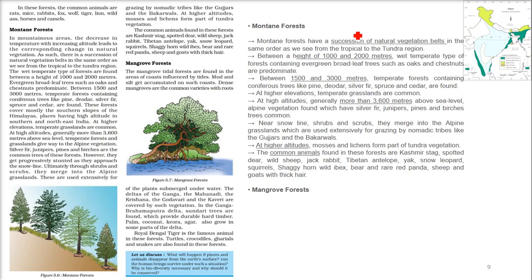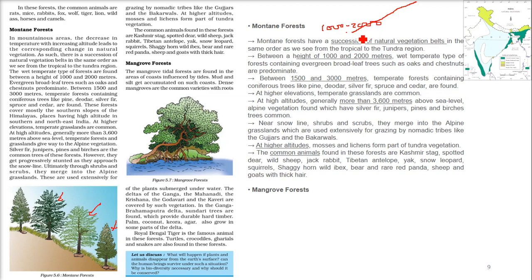From 1000 to 2000 meters, we find wet temperate type forest with evergreen broadleaf trees like oaks and chestnuts. From 1500 to 3000 meters, temperate forest has coniferous trees like pine, deodar, silver fir, spruce, and cedar. At higher elevation, we find grasslands and plain regions in the mountains.